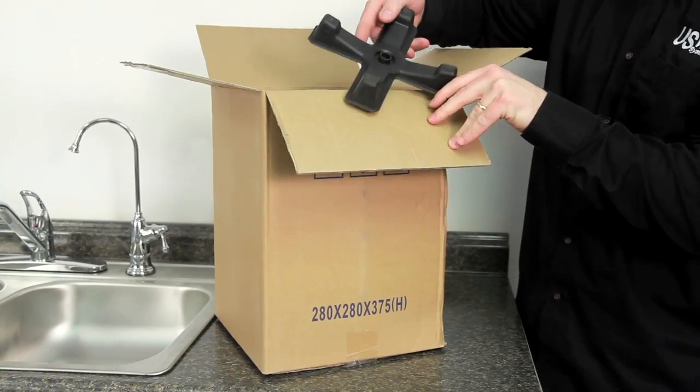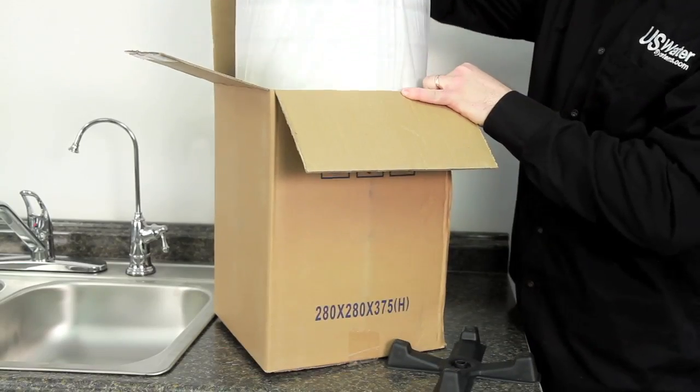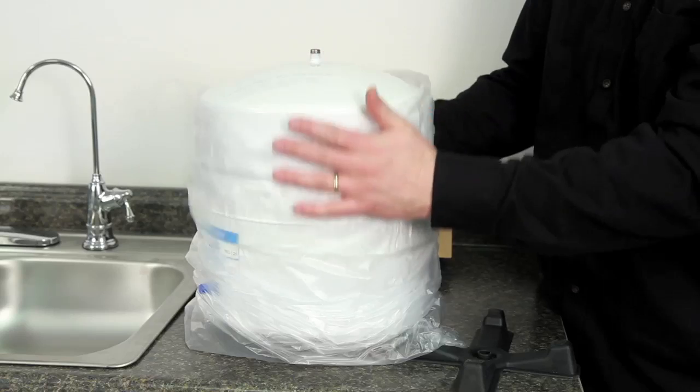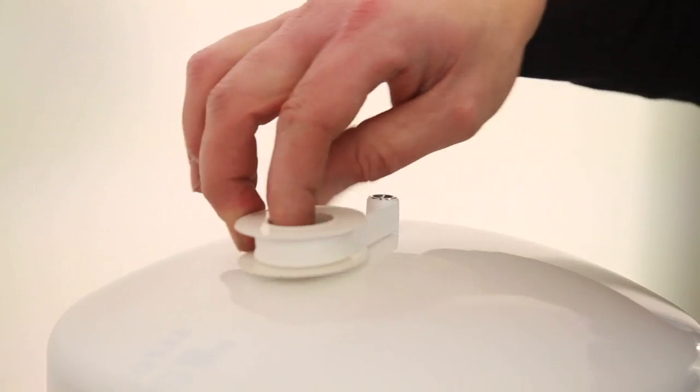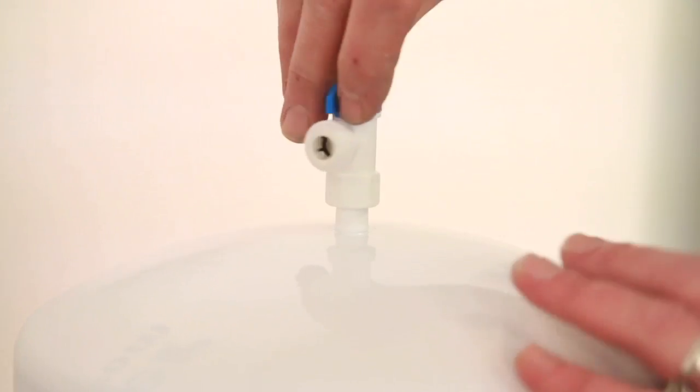Now, we'll remove our reverse osmosis tank and base. Bases may or may not be included. This is a standard NSF certified 3.2 gallon metal tank. The tank valve will be installed on the top of the tank at the threaded port. Use Teflon tape and wrap four to five wraps on the threaded port in a clockwise manner.